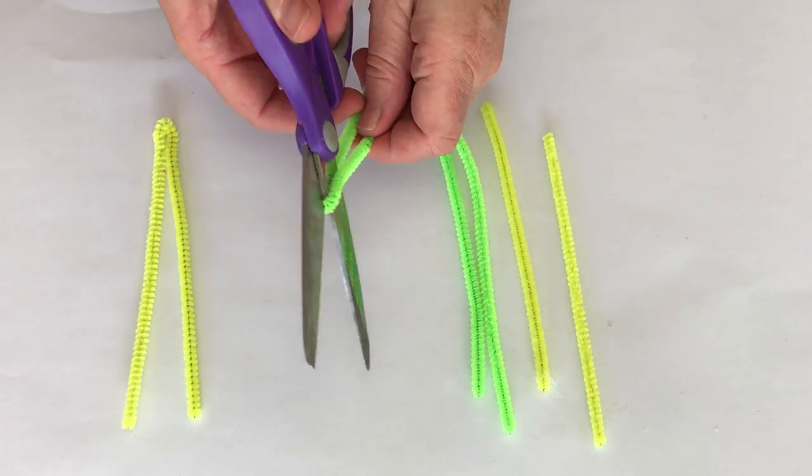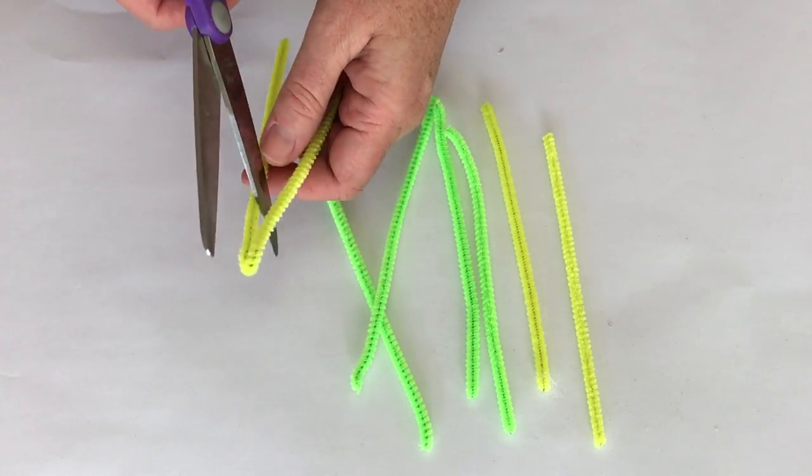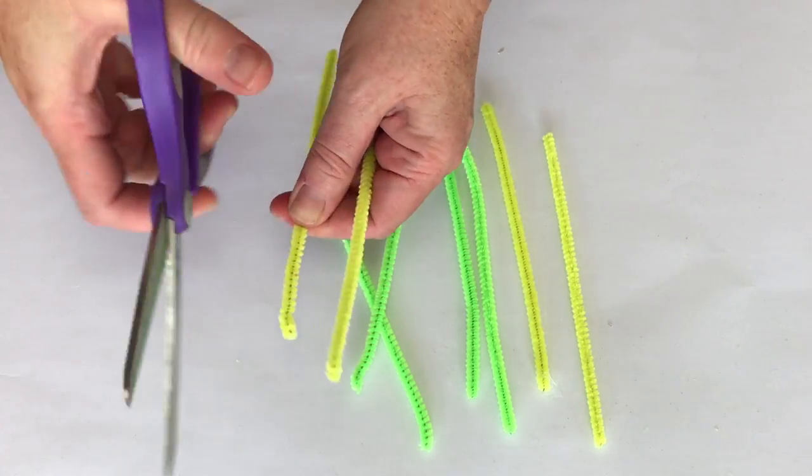Now we're going to make the spider legs. We will need four pipe cleaners. Fold each one in half and then cut them into two pieces.